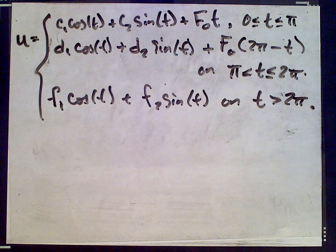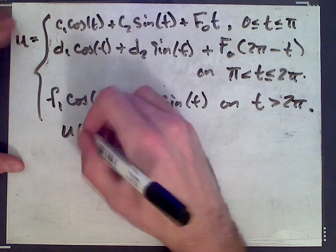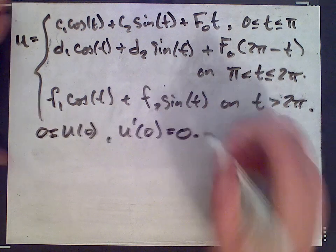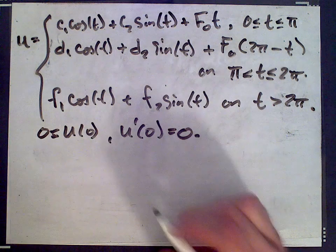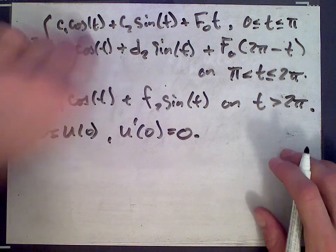Alright, so now we need to solve for the constants. We have the initial data u(0) is 0 and u'(0) is 0. That's going to let us solve for the constants in the first part of this piecewise function, so c1 and c2.